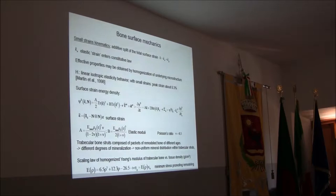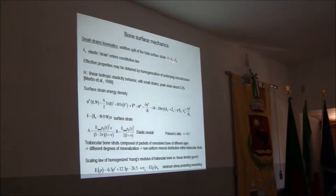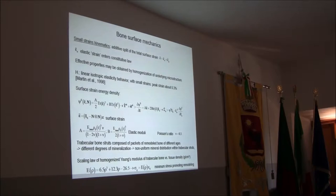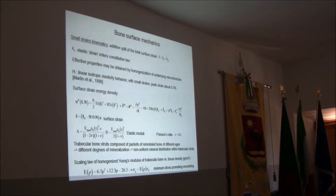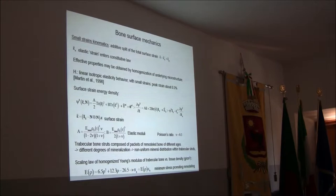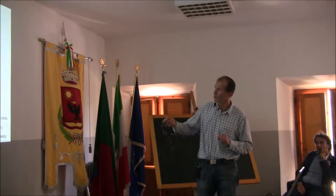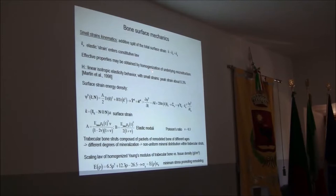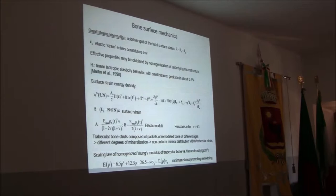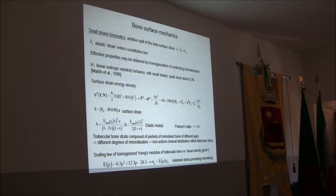Bone usually develops only small strains, as is well known, so we can linearize the kinematics reasonably. Instead of a multiplicative decomposition, we write an additive decomposition of the total surface strain into elastic and growth parts. The effective properties may be obtained by a homogenization scheme. If we have a geometrical model of the microstructure — as done by Gibson, Ashby, and others — we can compute effective properties by homogenization, and also obtain scaling laws of effective properties versus effective density. The surface strain energy density introduces a cubic dependency on surface density, with two elastic moduli and a Poisson ratio of around 0.3.